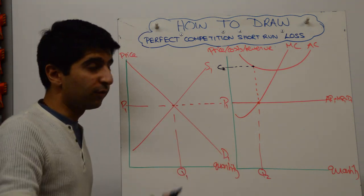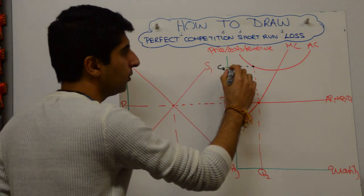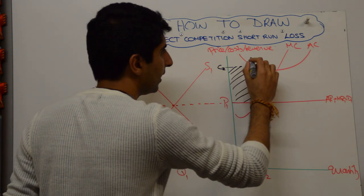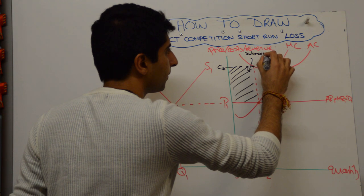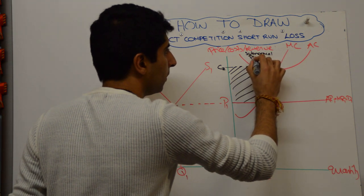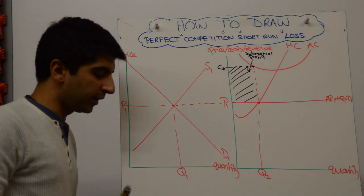And P1 is basically the revenue. So costs are much higher than revenue. This box represents the loss. So we can label that subnormal profit. That's fine. That's half the story down.